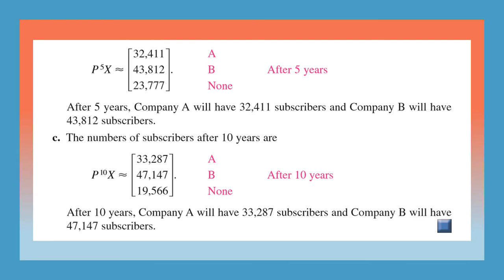And if it is after 10 years, we have to find P raised to 10. So company A will have 33,287, B will have 47,147 and the remaining in no cable.